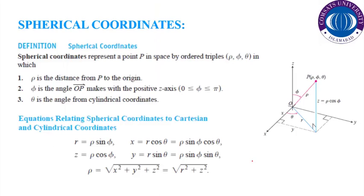Now let us move to the spherical coordinate system. The spherical coordinate system represents points belonging to a sphere. Any point on a ball can be represented using three quantities: first, the distance of that point from the origin.